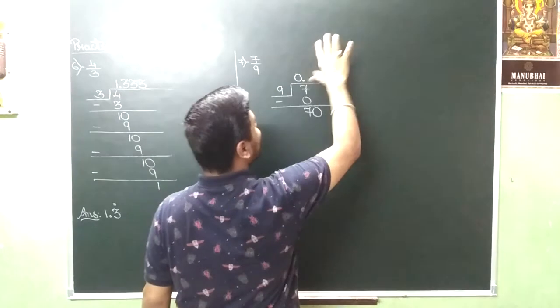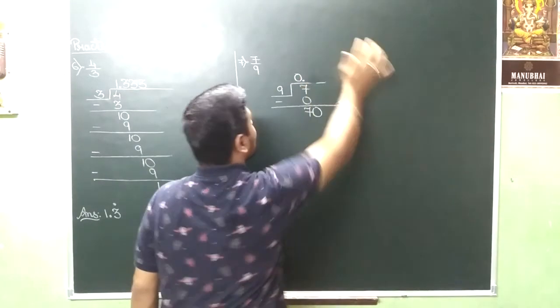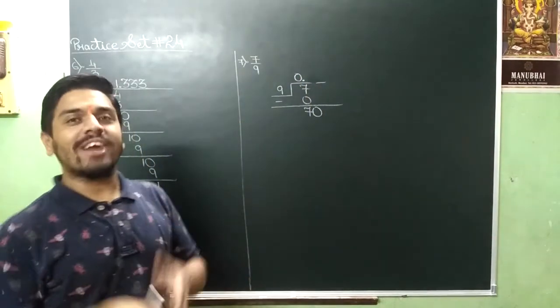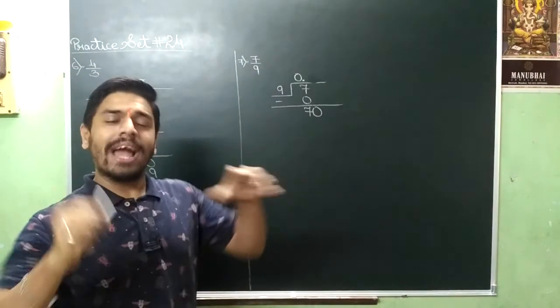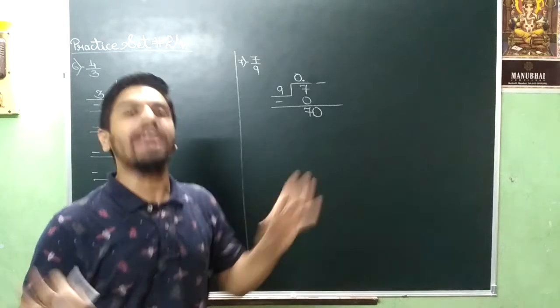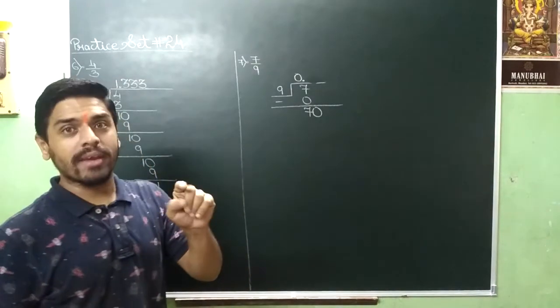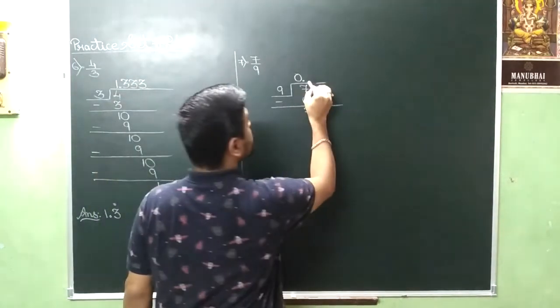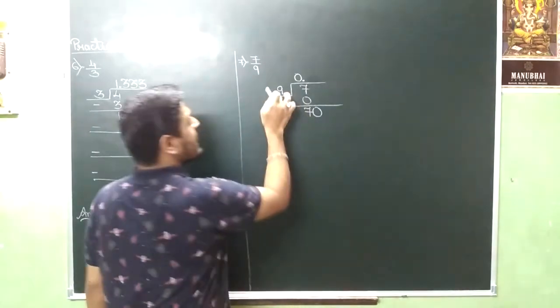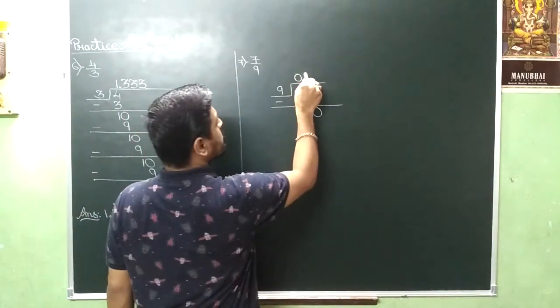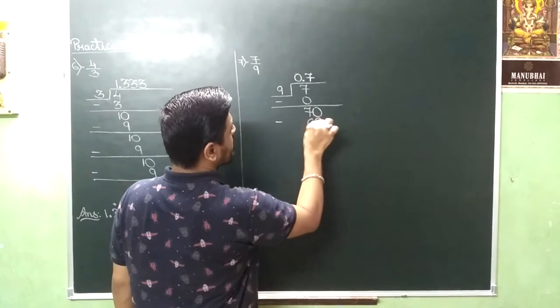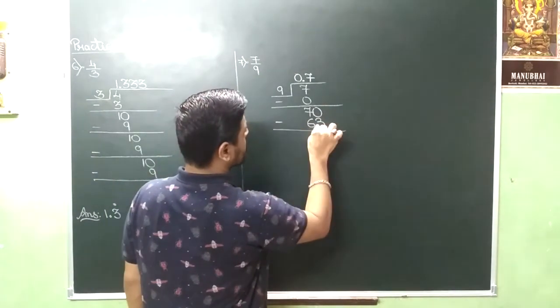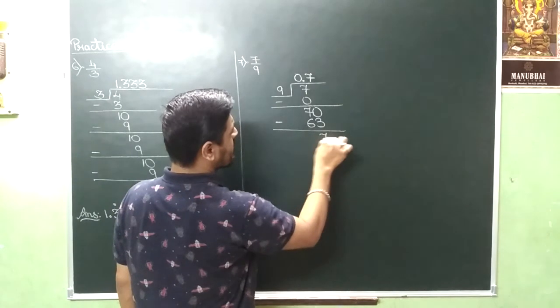Mujhe laga aap ok. Nei jab am easa dhyana dikti ho na toh maghe achha lagta hi. It means ka aaplog sif kaan me head phone lagata gaya external speaker ka. Aaplog sif sun ne raya gaya. Hamara attention bhi hai. And that is more important. 9, 7 is a 63. Remainder will be 7.